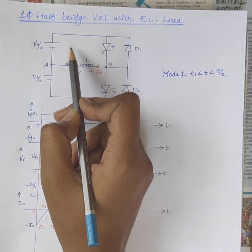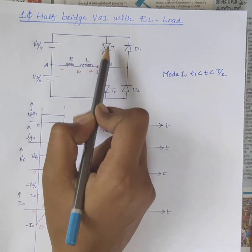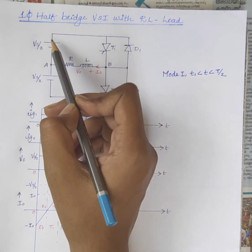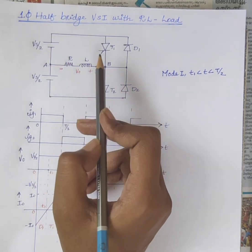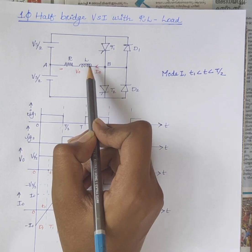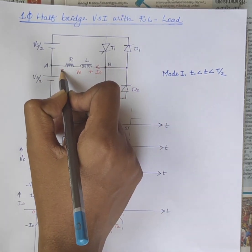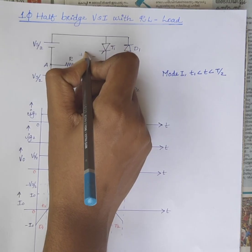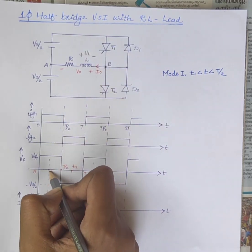The current flows through the path Vs/2 → T1 → load → back to Vs/2, so the output current I0 is positive. The output voltage is also positive because B is positive with respect to A. In the case of inductive load, the inductor stores energy in the opposite direction of current flow, so the load voltage is plus on one side and minus on the other. Therefore the inductor voltage polarity is minus-plus during the interval T1 to T/2.